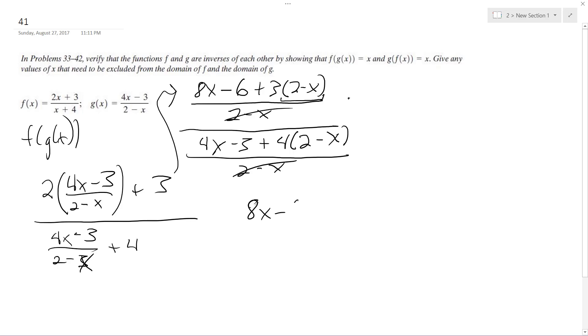Alright, so we get 8x minus 6. I'm going to multiply this out. So I get 6 minus 3x over 4x minus 3 plus 8 minus 4x. Alright, so 4x's cancel out here.